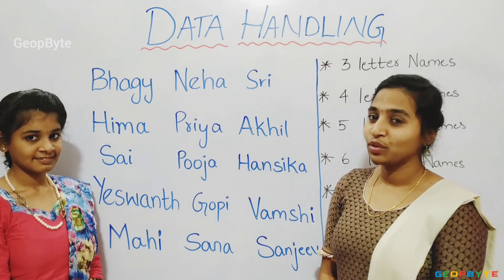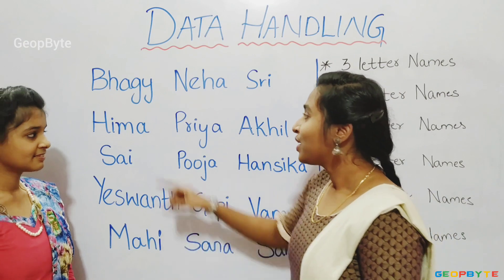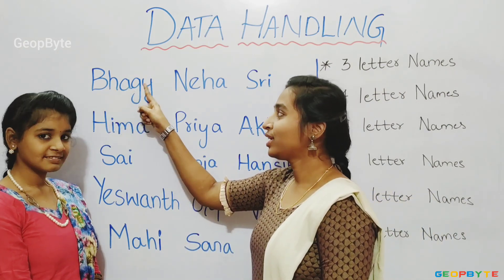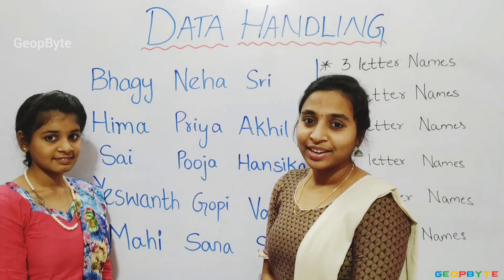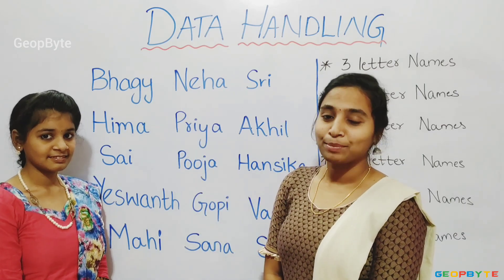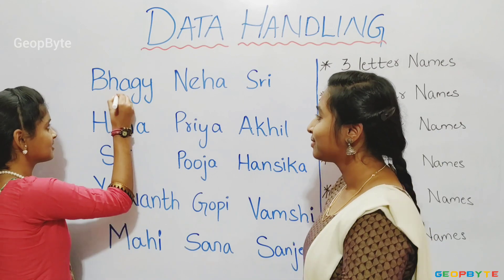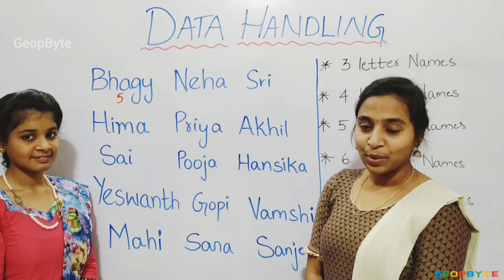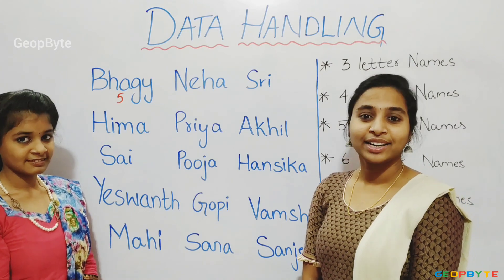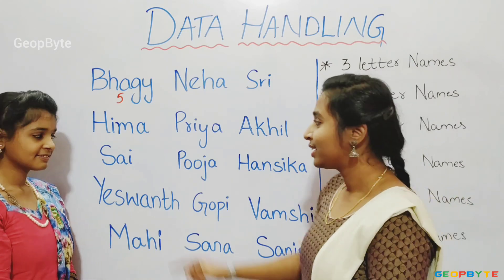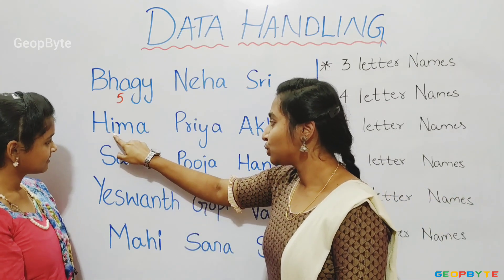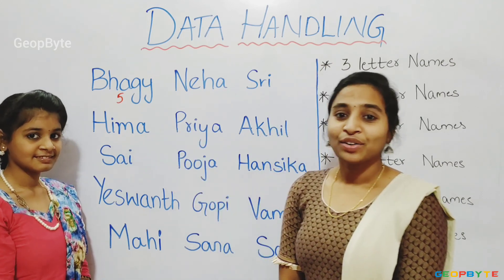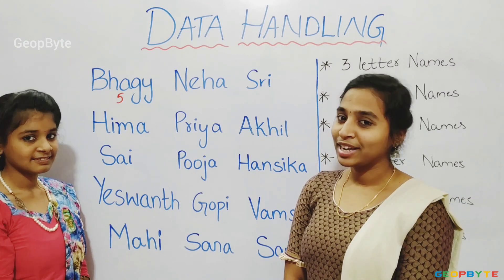Let us go with Bagi. One, two, three, four, five. There are five letters in the name Bagi. Now, let us count how many letters are there in the name Himma. One, two, three, four. There are four letters in the name Himma.